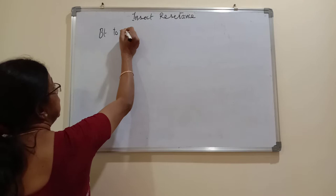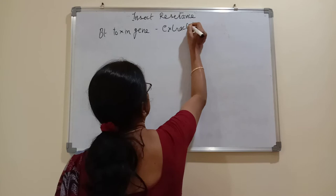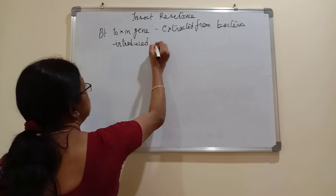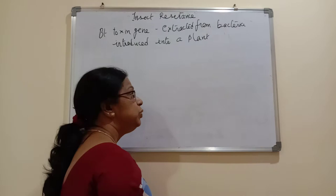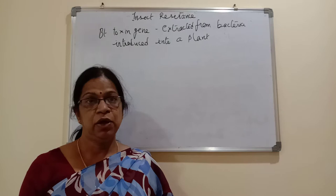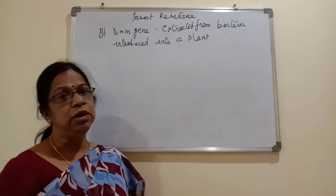The gene used is called the Bt toxin gene. This Bt toxin gene is extracted from bacteria and introduced into a plant. This introduction will make the plant resistant to a particular insect, so it functions as an insecticide and can be called a bio-insecticide.